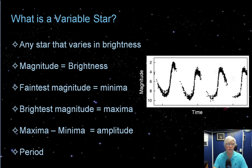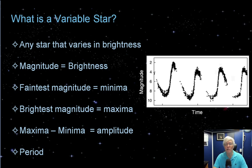From trough to peak would be the amplitude of the star — how it changes in brightness from maxima to minima. The time from one peak to the next peak, or from one trough to the next trough, is the period. The period can be from minutes to years long, depending on the type of variable star, and I'll get into all different kinds of variable stars later in the presentation.